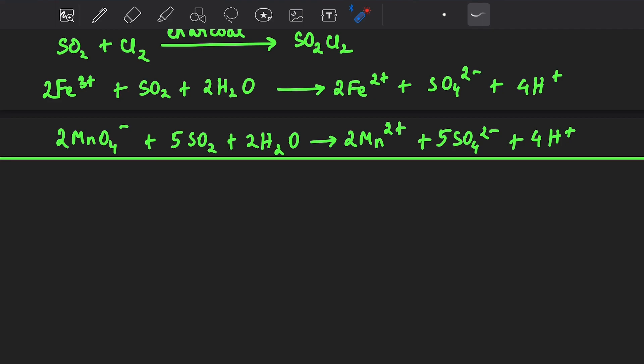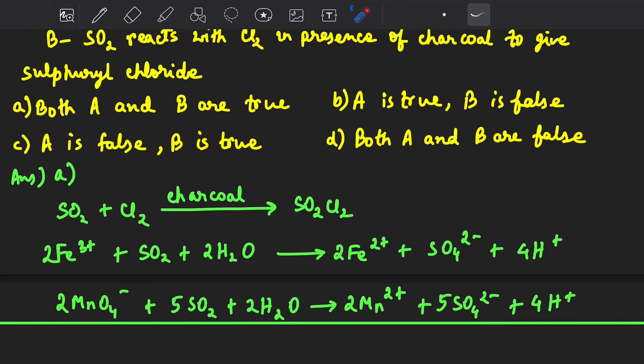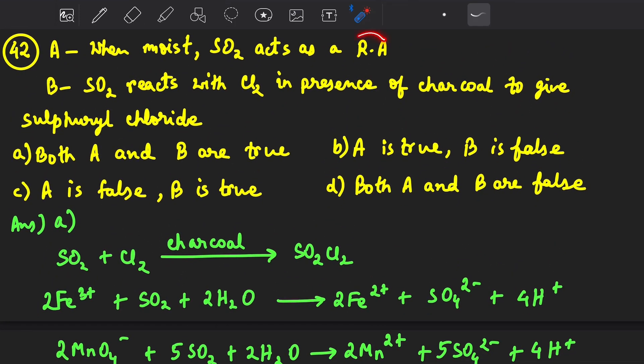Similarly here, MnO4- permanganate gets reduced to Mn2+ and SO2 again gets oxidized to SO4^2- where oxidation state is plus 6. So SO2 acts as reducing agent in all these reactions.